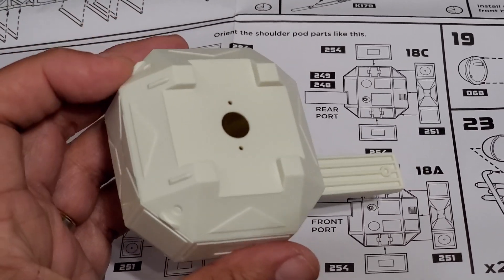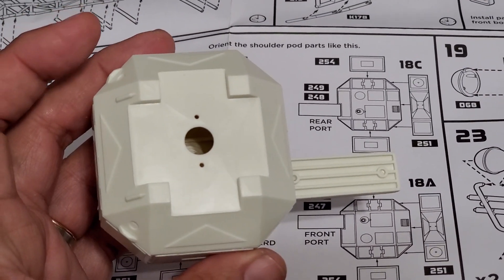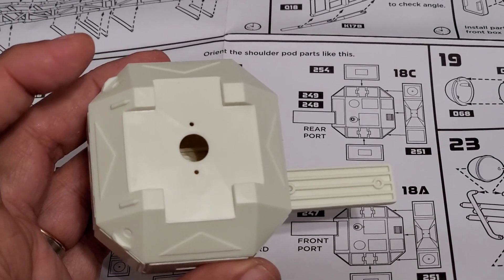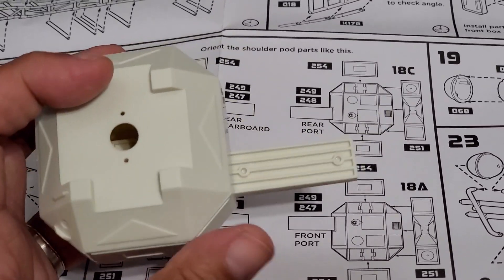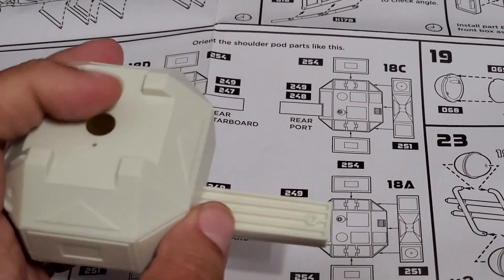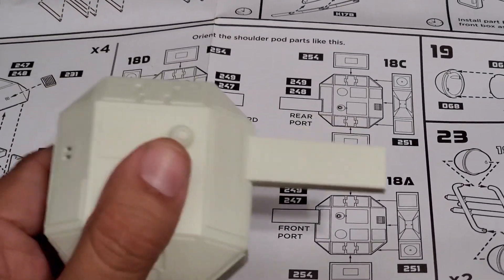Now, unfortunately, this could be installed one of two ways. The way you want to install it is with these two protrusions facing away from the Eagle, so facing away from this long piece like this.